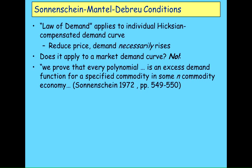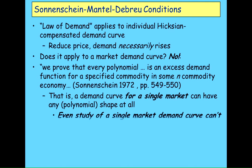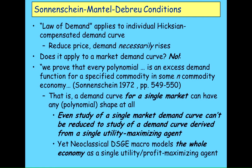They said: every polynomial is an excess demand function for some commodity in a general equilibrium framework. In English, that's saying the demand curve for a single market can have any shape at all that you can describe using a polynomial equation. Therefore, what we're doing when we draw a downward-sloping market demand curve, we are violating the fundamental aspect of neoclassical theory. Because any shape you can draw without taking your hand off the paper is a valid demand curve. You should be drawing squiggly lines for market demand curves, let alone the entire economy. An enormous fallacy.